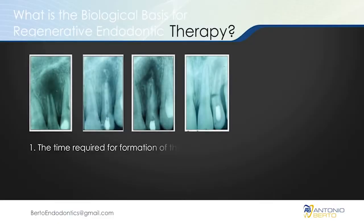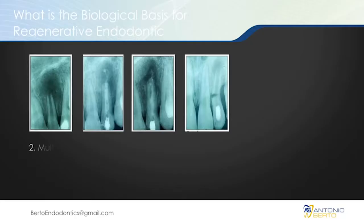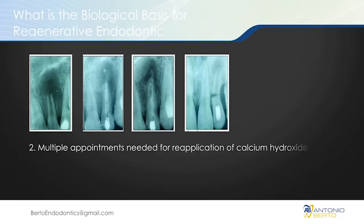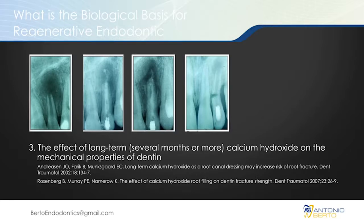When we look at this case historically, what we will try to do is use multiple visits of calcium hydroxide to obtain a plug apically and eventually fill the root canal with our filling material. The problem with this treatment is that we will need multiple treatments with calcium hydroxide, the patient will have to be compliant, and multiple changes of calcium hydroxide have been shown to debilitate the mechanical properties of dentin.